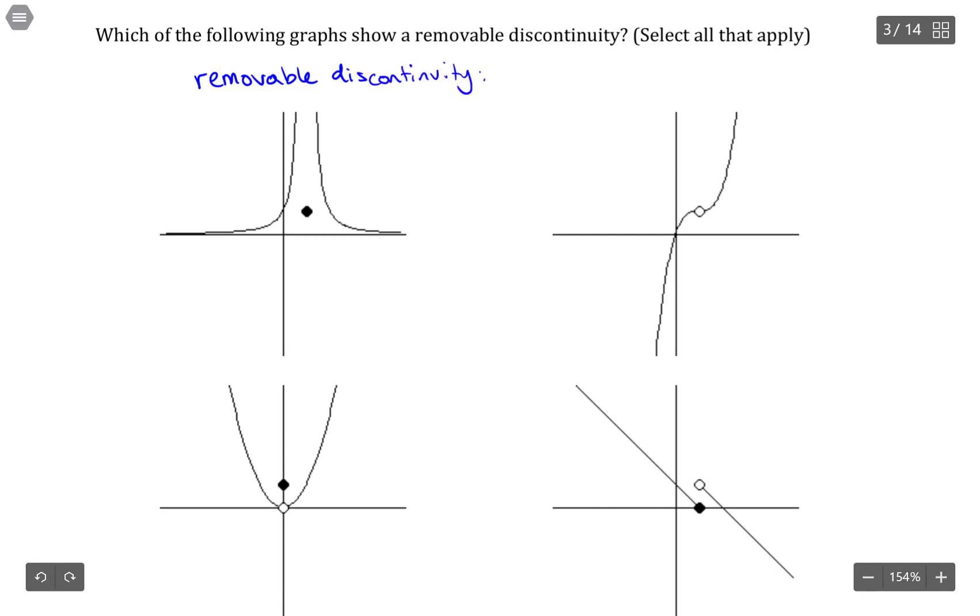So a removable discontinuity occurs when the limit happens to exist. So the limit as X approaches some value of a function exists, but does not equal the function value at that particular point. And that can be because the function value is not defined, or it could be because it's just some other value.